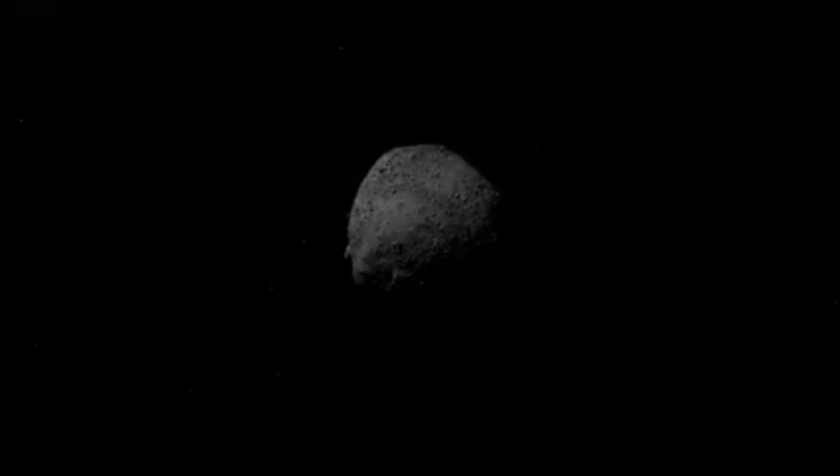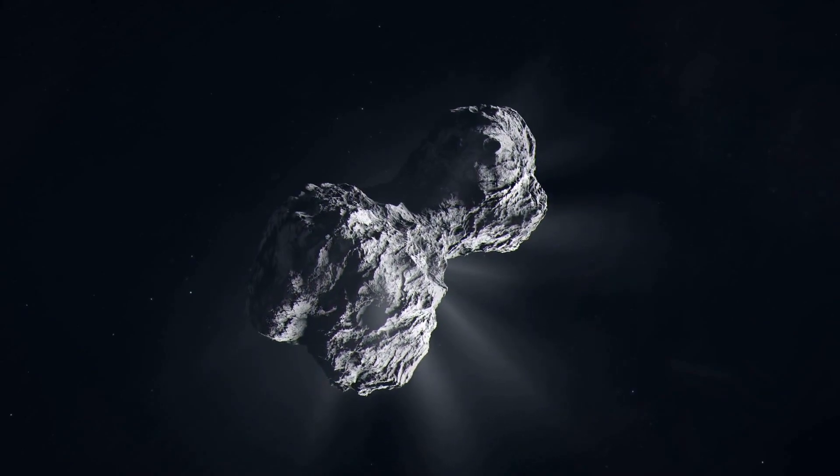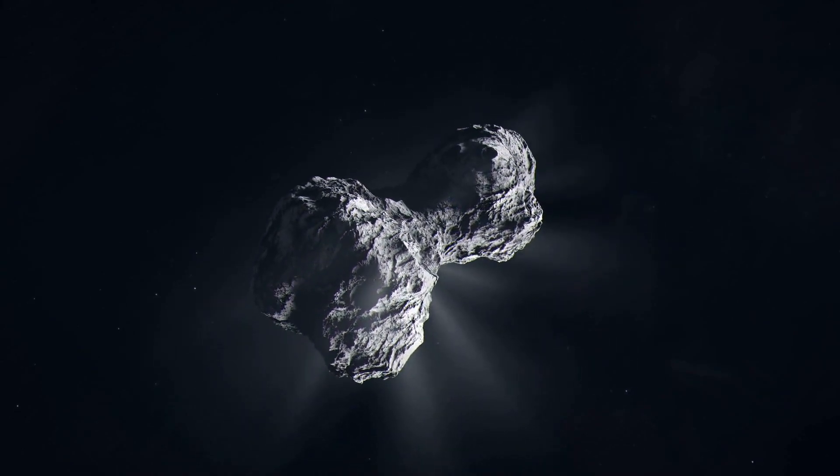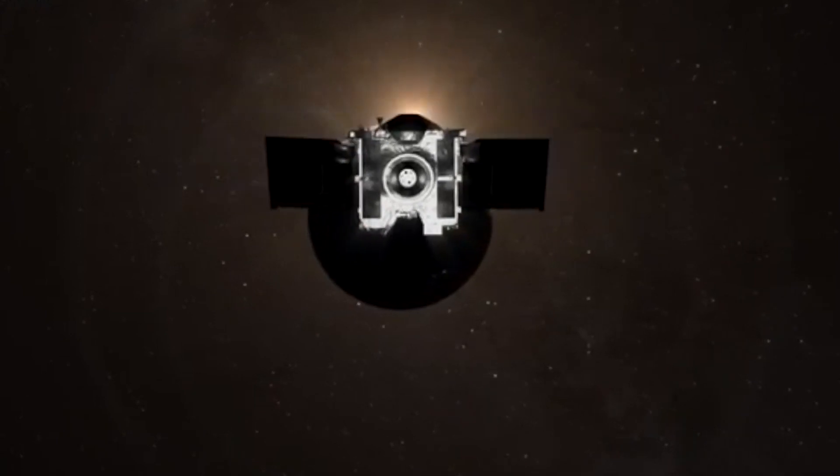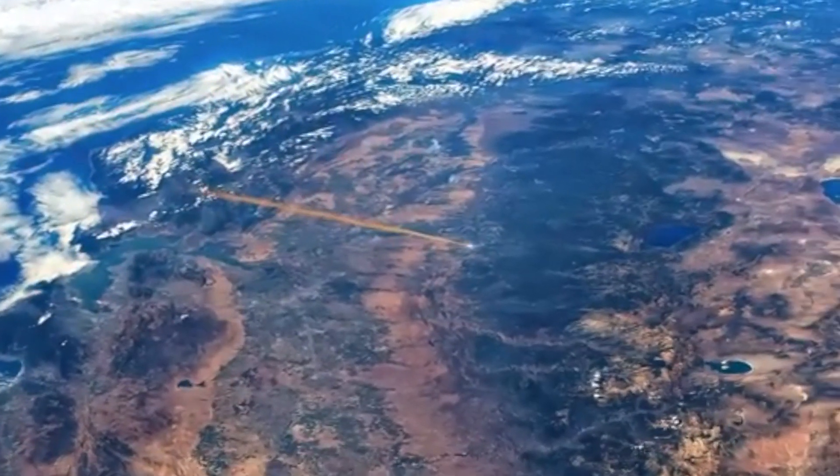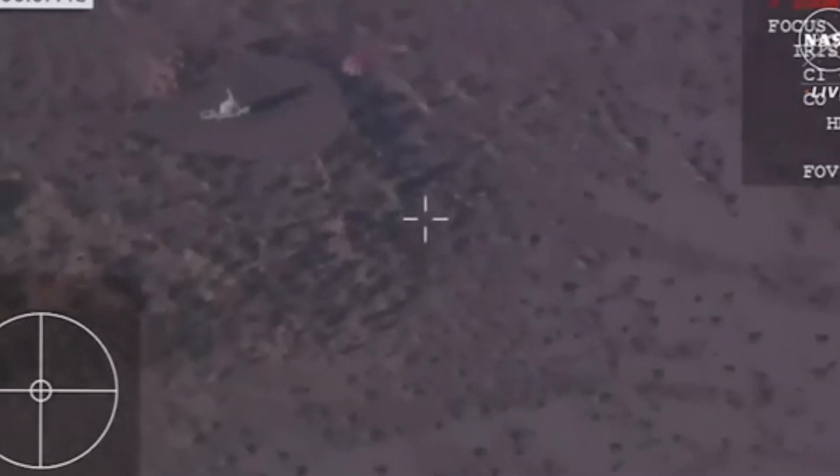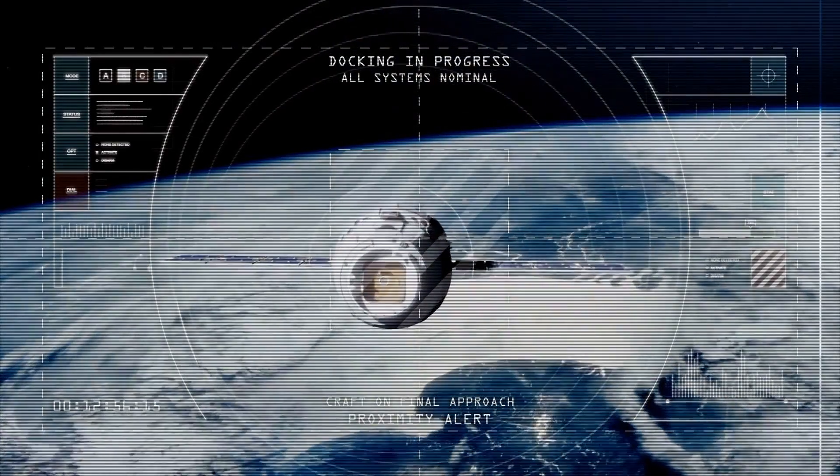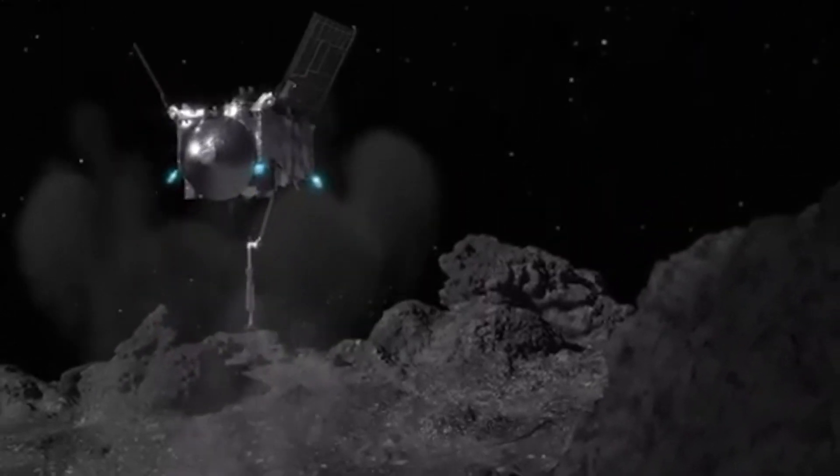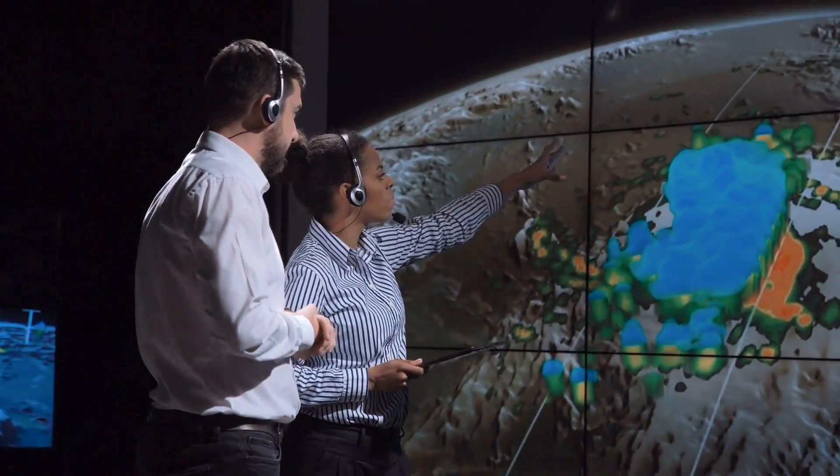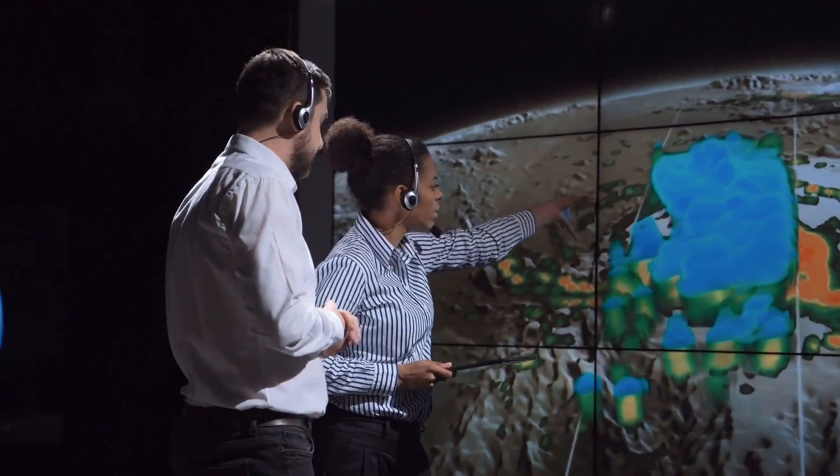After almost two and a half years, on September 24, 2023, the spacecraft reached Earth's vicinity and released the capsule containing the asteroid sample. The capsule entered Earth's atmosphere at a speed of 12 kilometers per second and deployed a parachute to slow down its descent. It safely landed at the Utah test and training range, where it was recovered by NASA personnel.